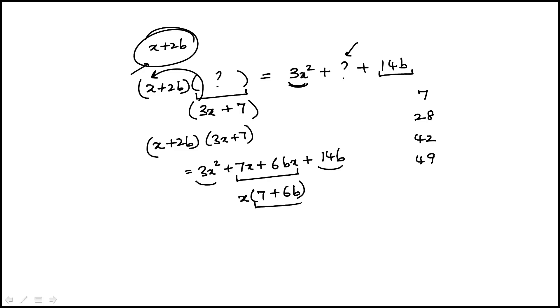We're looking for that choice which would make b a positive integer. For example, could this be equal to 7? Well, if that's the case, then b would have to be 0. But this isn't a positive integer, so we know 7 is out. If you try 28, you will see you get 6b equals 21, b is not an integer. So that's also out.